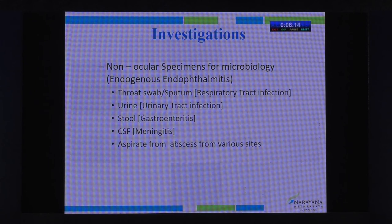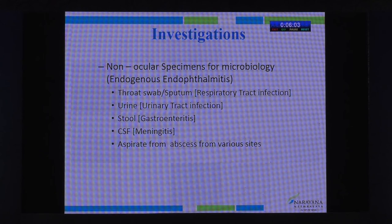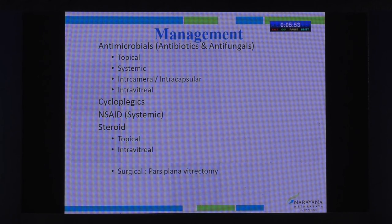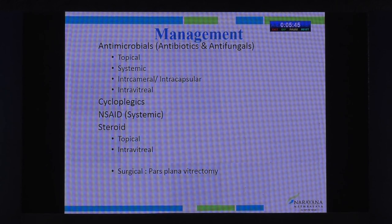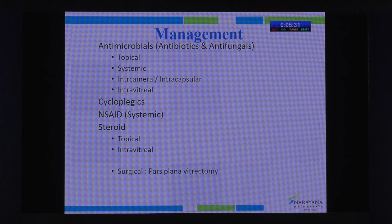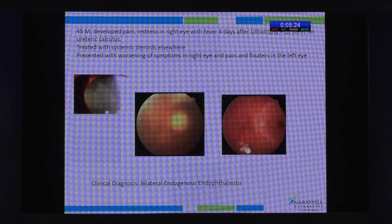Endogenous endophthalmitis is a true ophthalmic emergency — diagnosis is based on clinical judgment and treatment must start before investigation reports are available. We need to thoroughly investigate the patient systemically — blood counts for leukocytosis, identifying the focus of infection: sputum or throat swab for respiratory infection, urine for burning micturition, stool for gastroenteritis, CSF for meningism, and aspirate from any abscess. Management includes topical, systemic, and local antimicrobial therapy; cycloplegics for pain; and intravitreal steroids as supplementary. Vitrectomy is done if refractory to medical management.